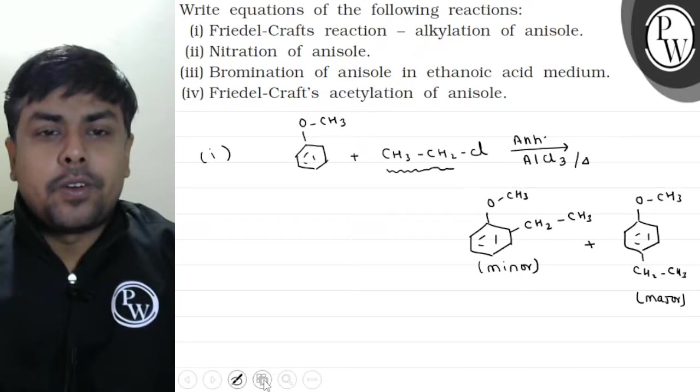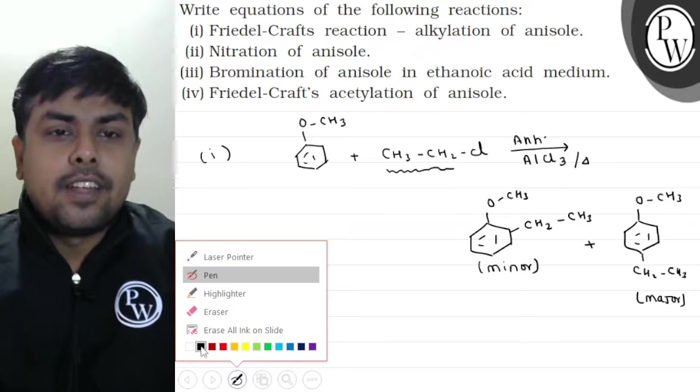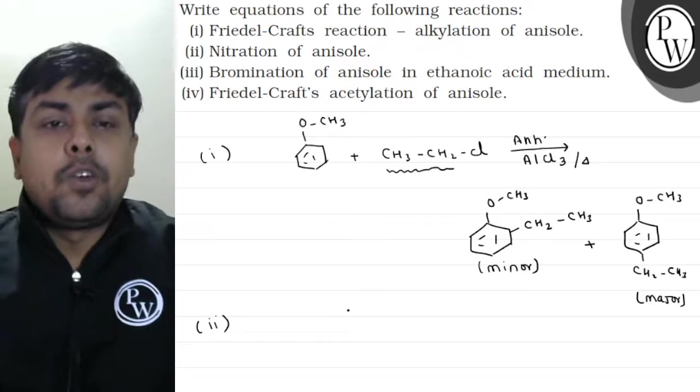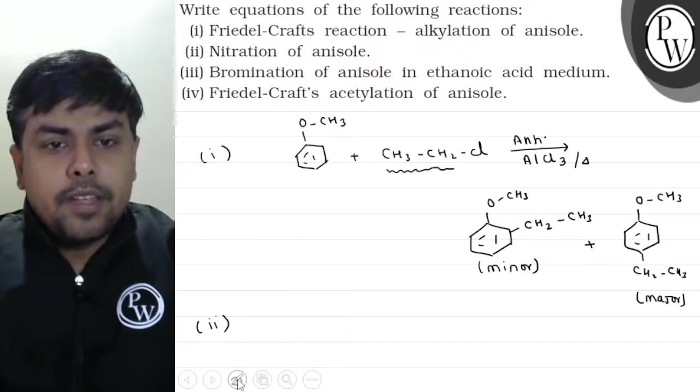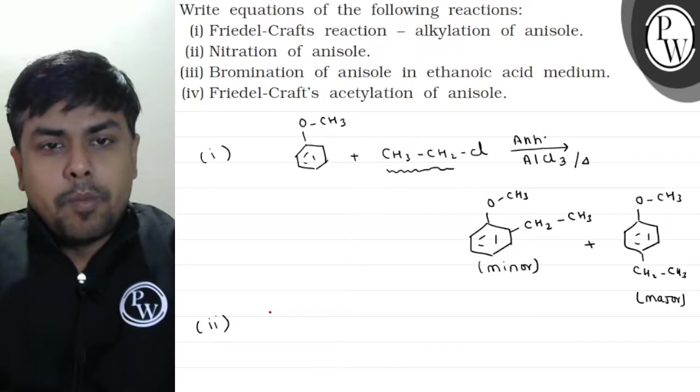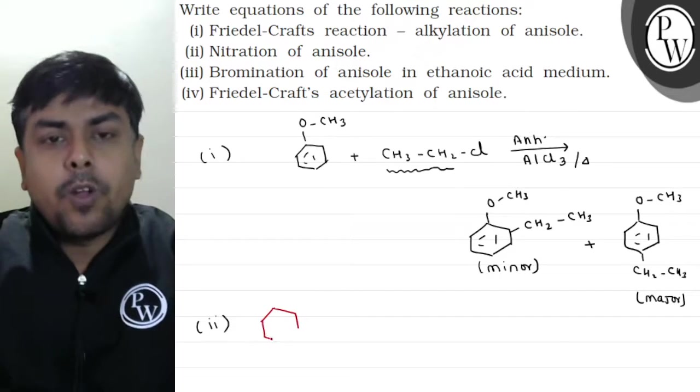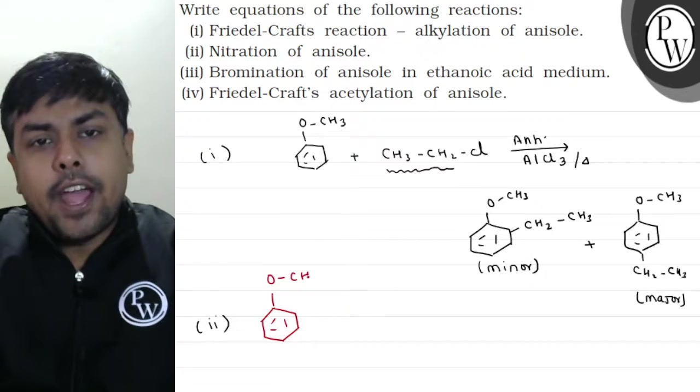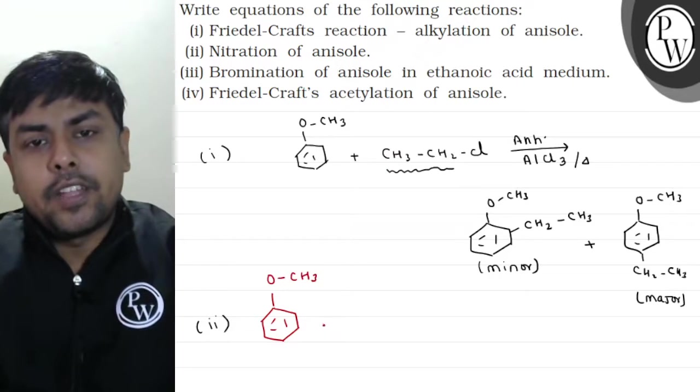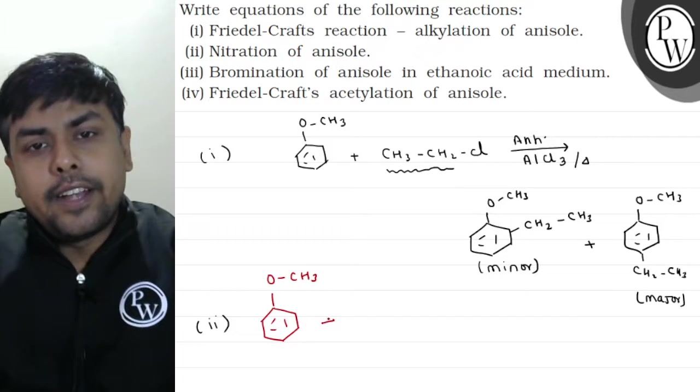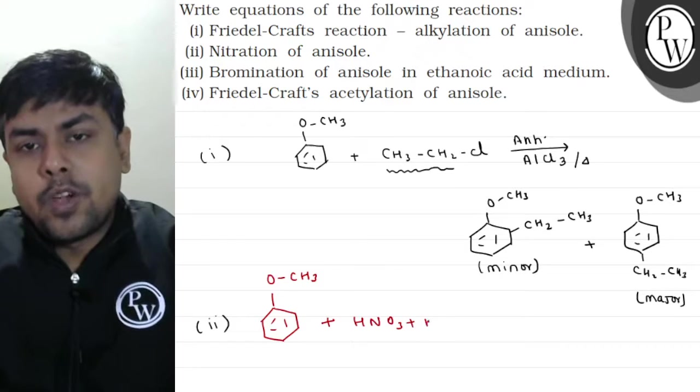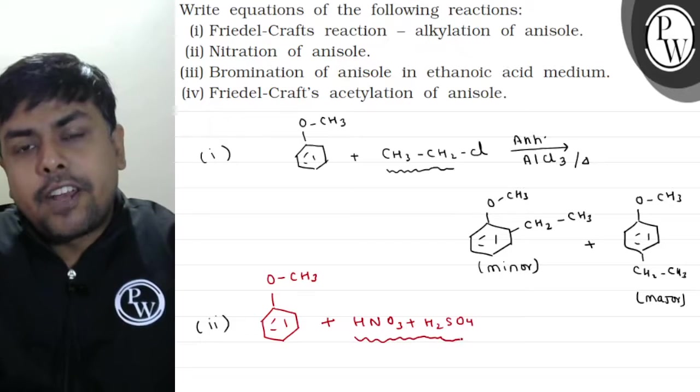Next, let's talk about the nitration reaction. Nitration of anisole. I need to do nitration reaction. For nitration reaction, we need nitrating mixture. First, anisole. For nitration, I'll use nitrating mixture, that is H-N-O-3 plus H-2-S-O-4. This mixture is called nitrating mixture.